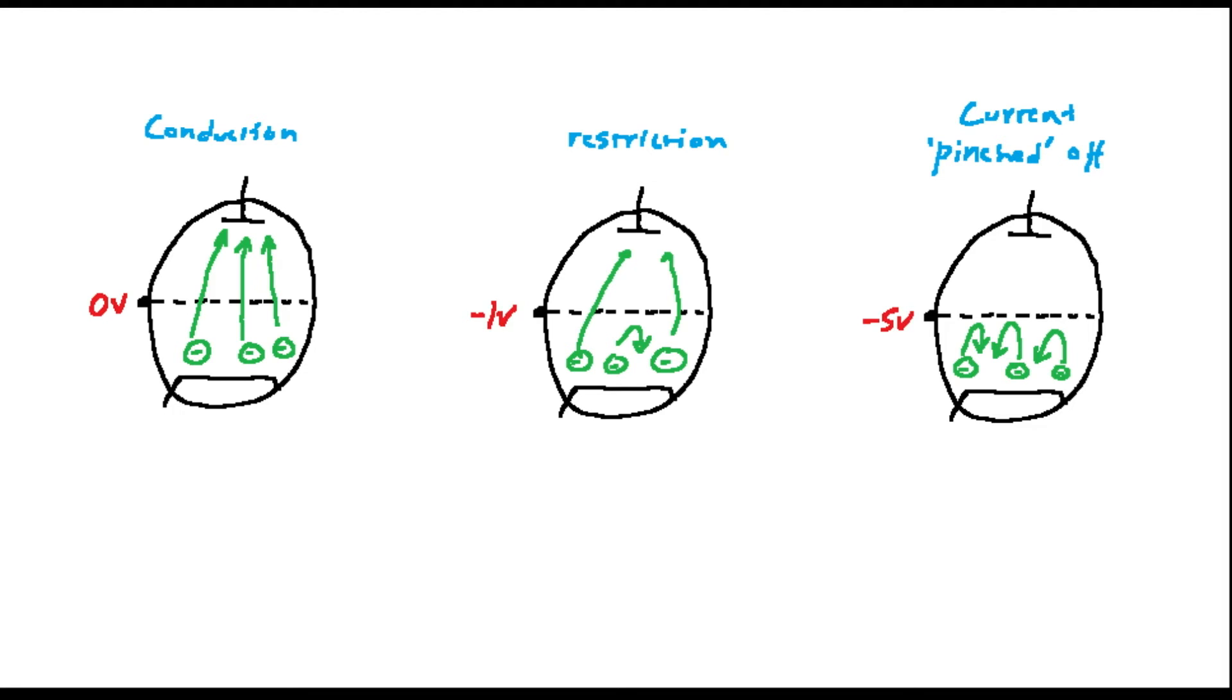As you can probably surmise from the diagrams, since the grid is just suspended in a vacuum, it has a very high input resistance, rather like a MOSFET.